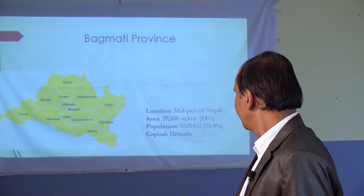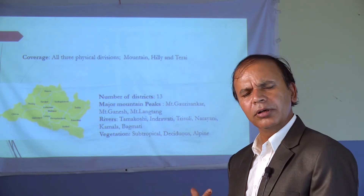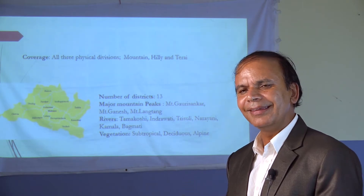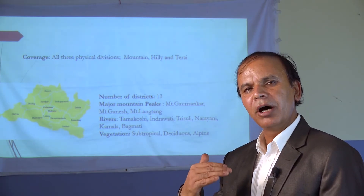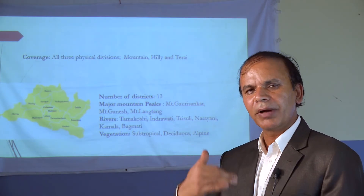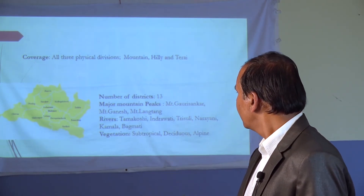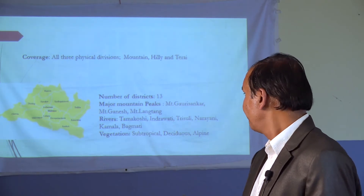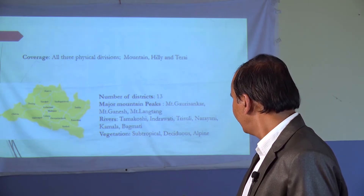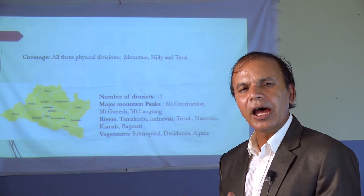Now I am drawing your attention towards the screen. There is a map of Nepal's federal structure — Nepal has seven provinces. We learned about Province Number One and Province Number Two; now we are talking about Province Number Three, or Bagmati Province. Bagmati Province is situated in the mid part of Nepal.